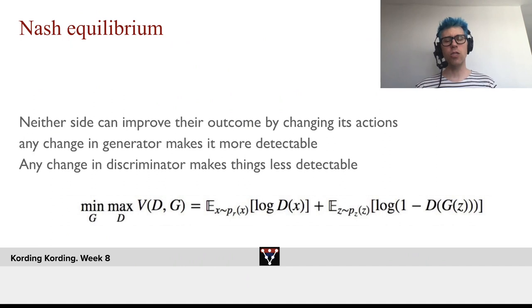So that means that neither side can improve the outcome by changing its actions. So there is no change to the generator that will improve the cost for it. And there's no change for the discriminator that will improve the change for it.